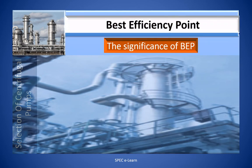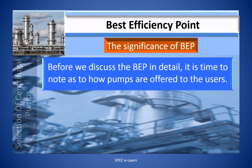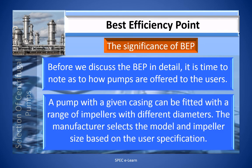Before discussing BEP in detail, it is important to note how pumps are offered to users. A pump carries a model number which indicates the pump or casing size. A pump with a given casing can be fitted with a range of impellers with different diameters, and the manufacturer selects the model and impeller size based on the user specification. The efficiency of the pump varies with the impeller diameter chosen.